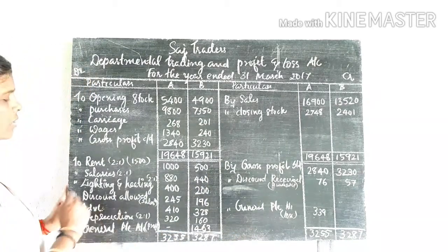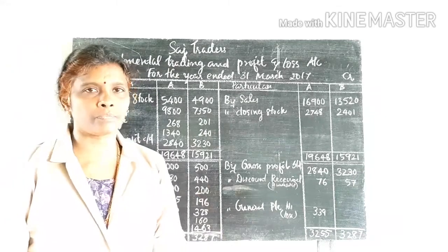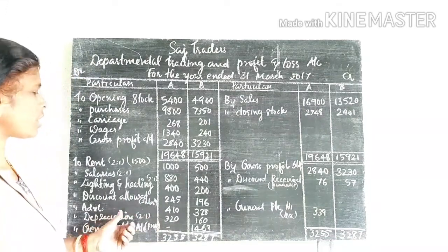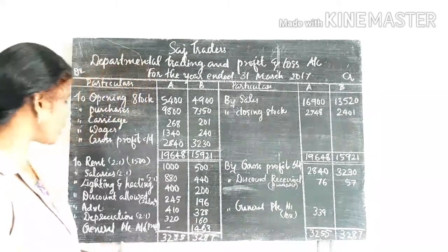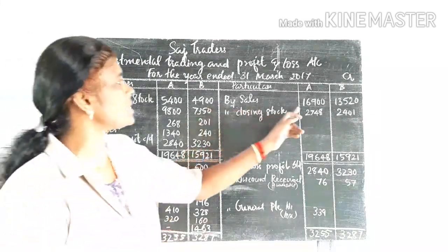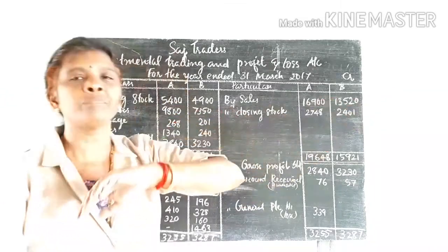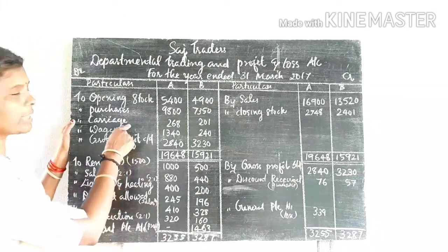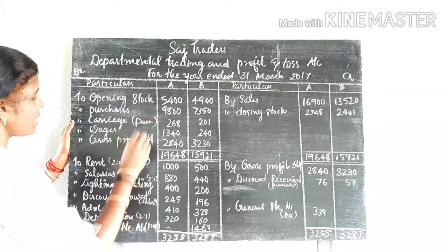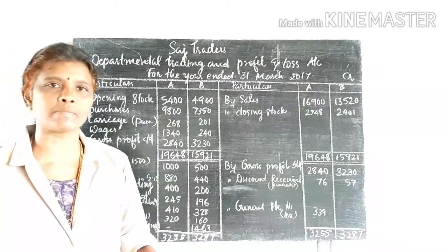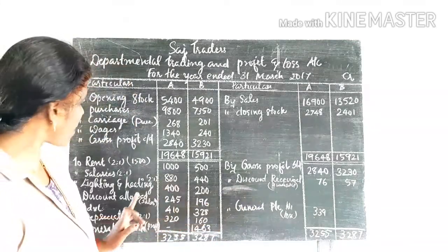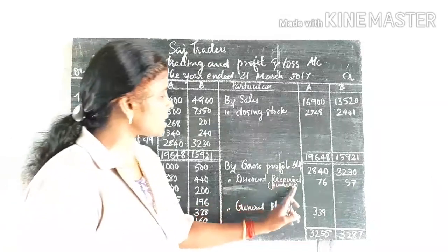Next item: discount allowed, which is apportioned on the basis of sales. Advertisement is also apportioned on the basis of sales. Departmental sales for Department A are 16,900 rupees and Department B are 13,520 rupees. Discount received is apportioned on the basis of purchases.